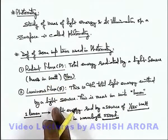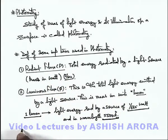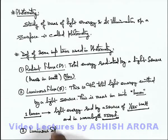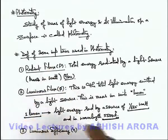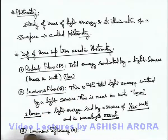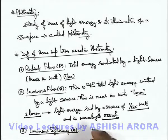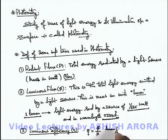And the ratio of these two terms we define as another term that we term as luminous efficiency. Luminous efficiency can be given in terms of the ratio of luminous flux to radiant flux. This is denoted by the symbol η, where η we simply define as φ by P for a light source, and its units are lumen per watt.